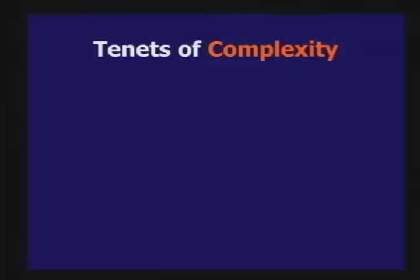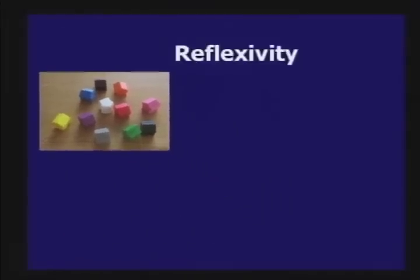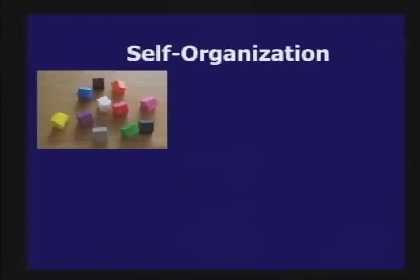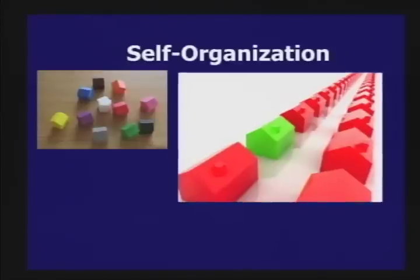The first thing to understand about a complex system is reflexivity. In our little community of houses, each house or agent has the ability to act upon or be acted upon by each and every other component of that system. The next tenet is self-organization. If in a system there is a well-defined structure or backbone, a natural cohesion will come to exist even if the system's parts are discordant in their individual objectives.